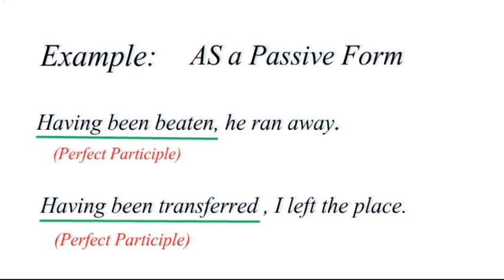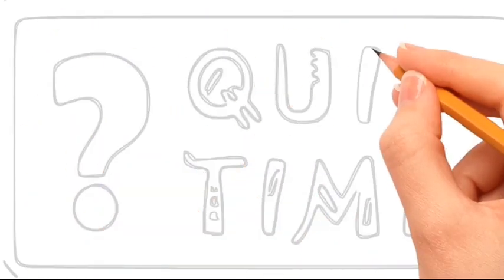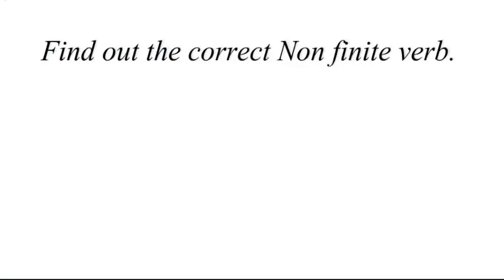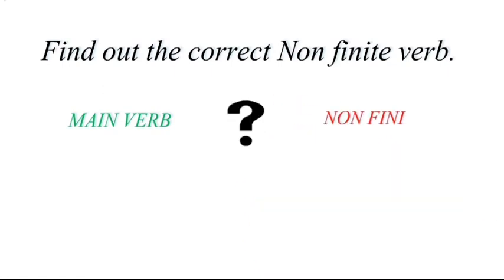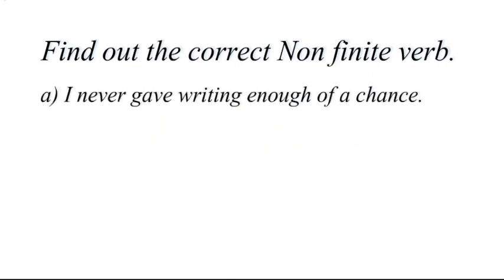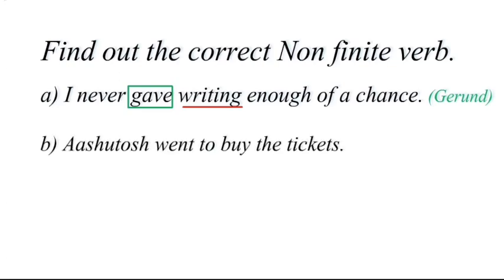That's it for the lesson. Now let's solve an exercise to recapitulate the rules. Identify the correct non-finite verb and also the main verb in each sentence. Sentence one: 'I never gave writing enough of a chance' — 'writing' is a gerund (it's an activity used as a noun) and the main verb is 'gave.' Next: 'Ashitosh went to buy the tickets' — 'to buy' is an infinitive and the main verb is 'went.'